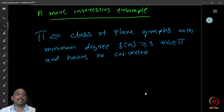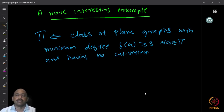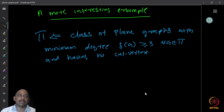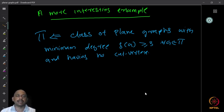Now let us look at a more interesting example to see what exactly the discharging method is about. Let π be a class of plane graphs — planar graphs with a plane embedding — with minimum degree at least 3. So every vertex has degree at least 3. We also assume that these graphs do not have cut vertices, just to make our argument simple.